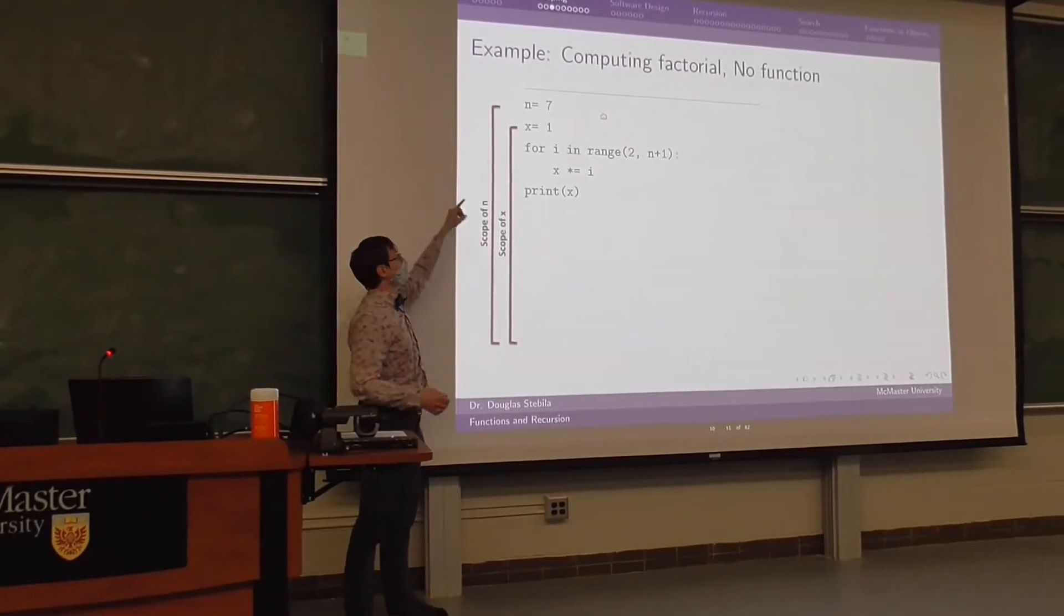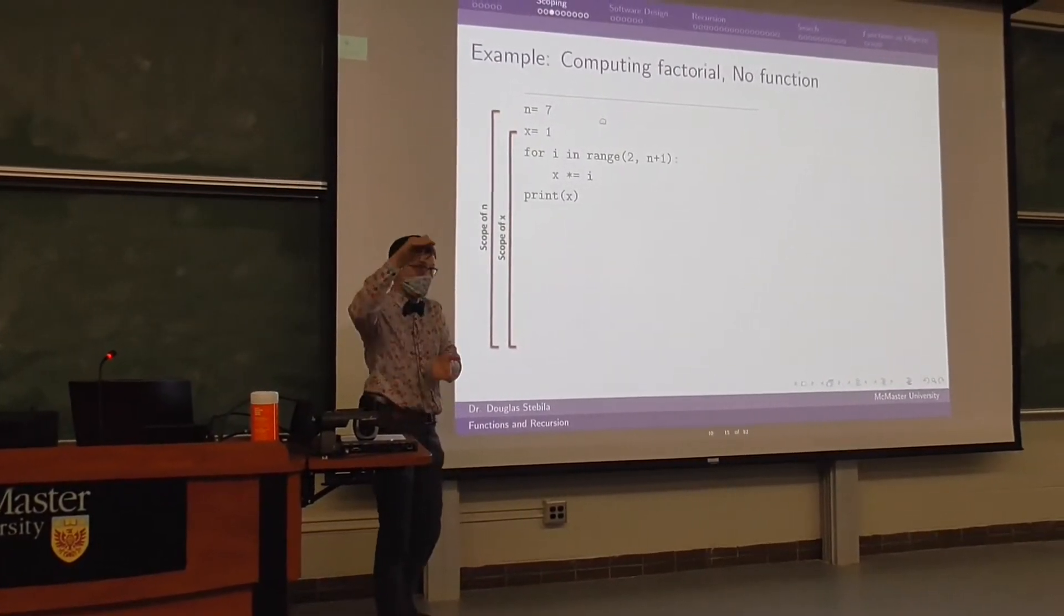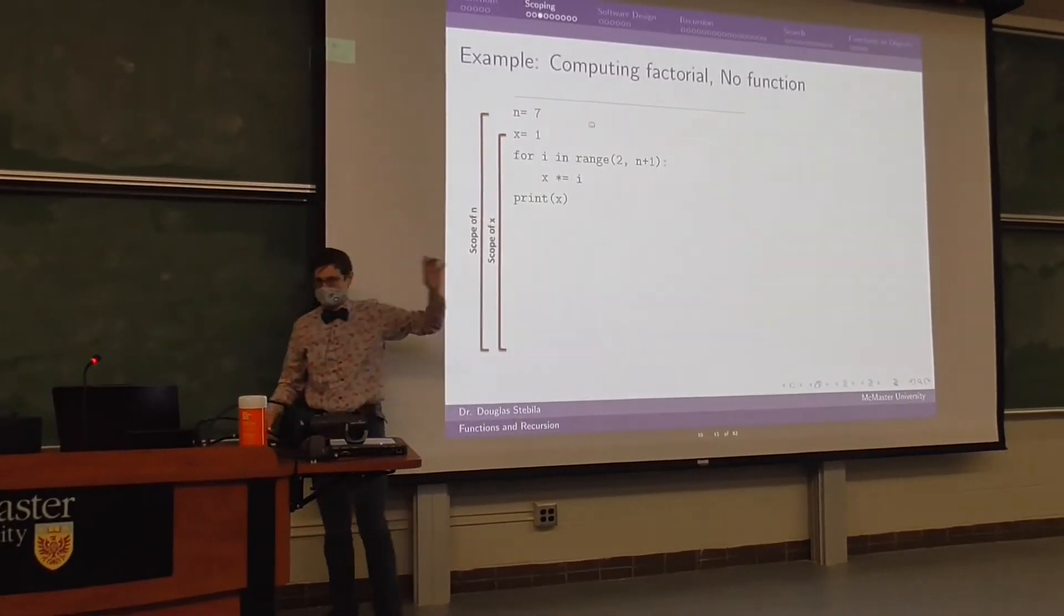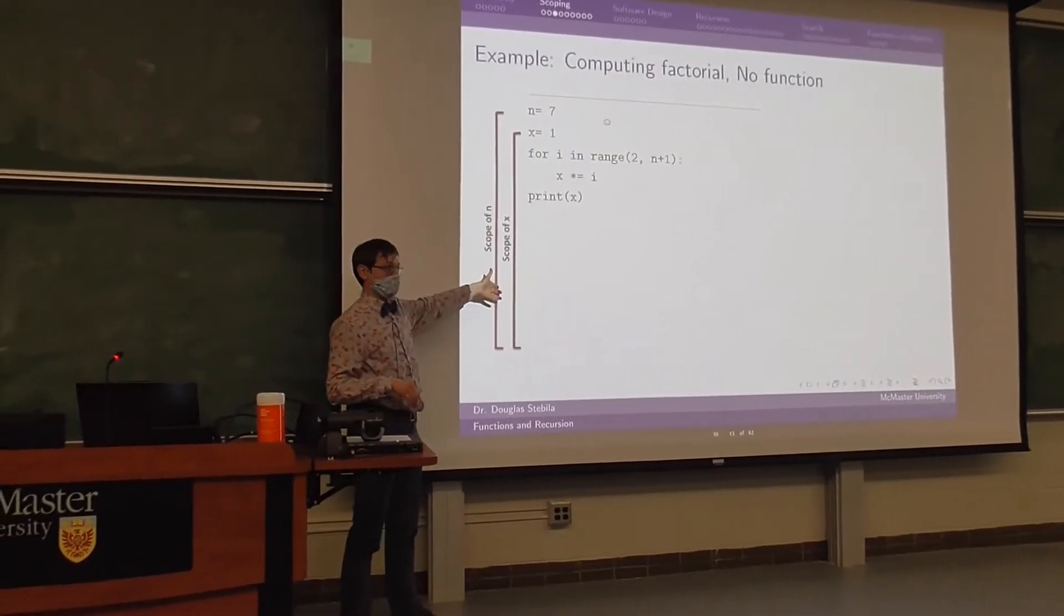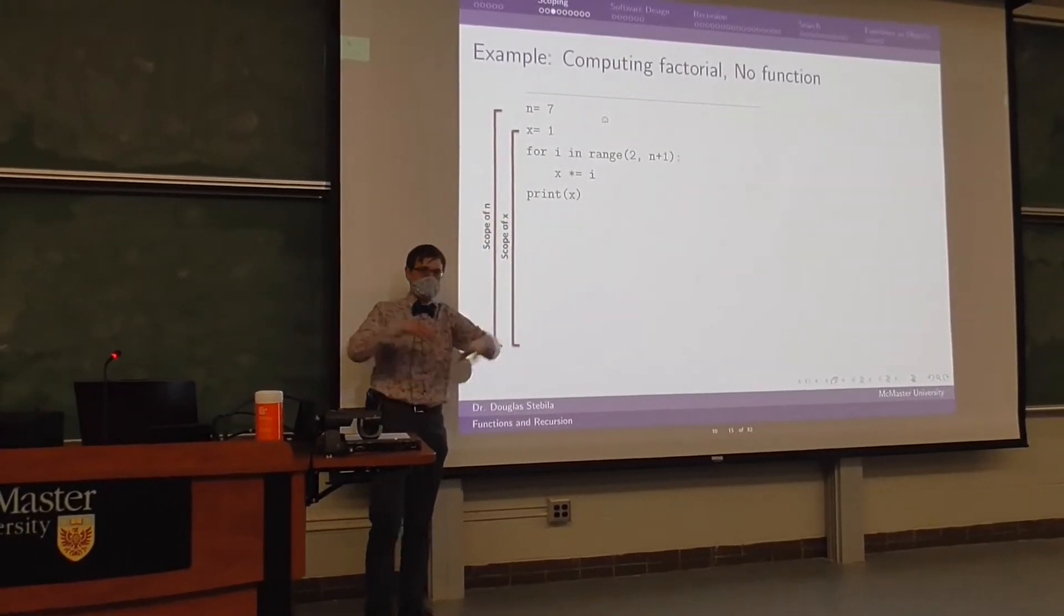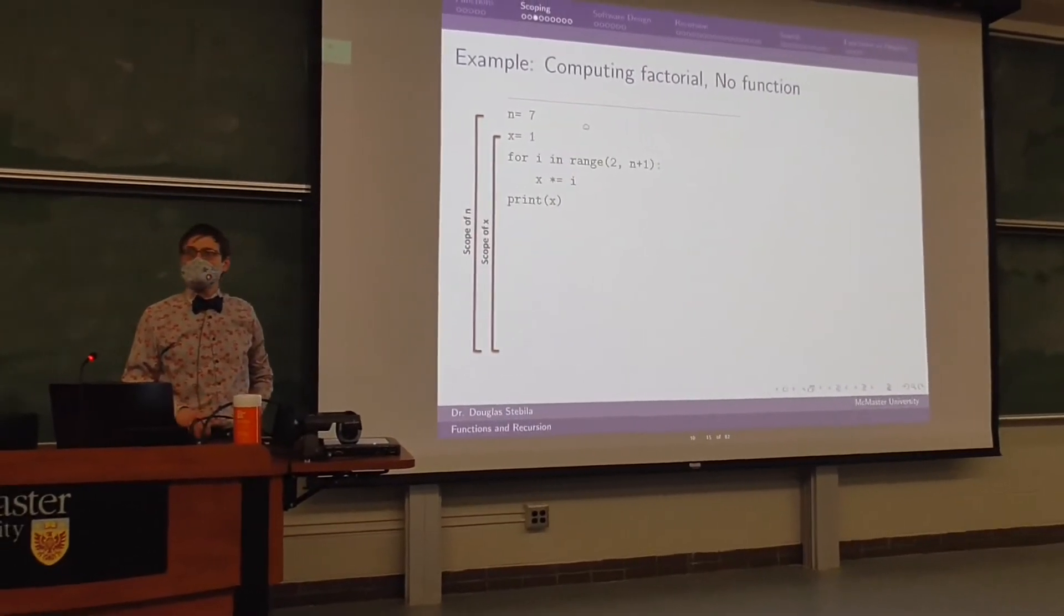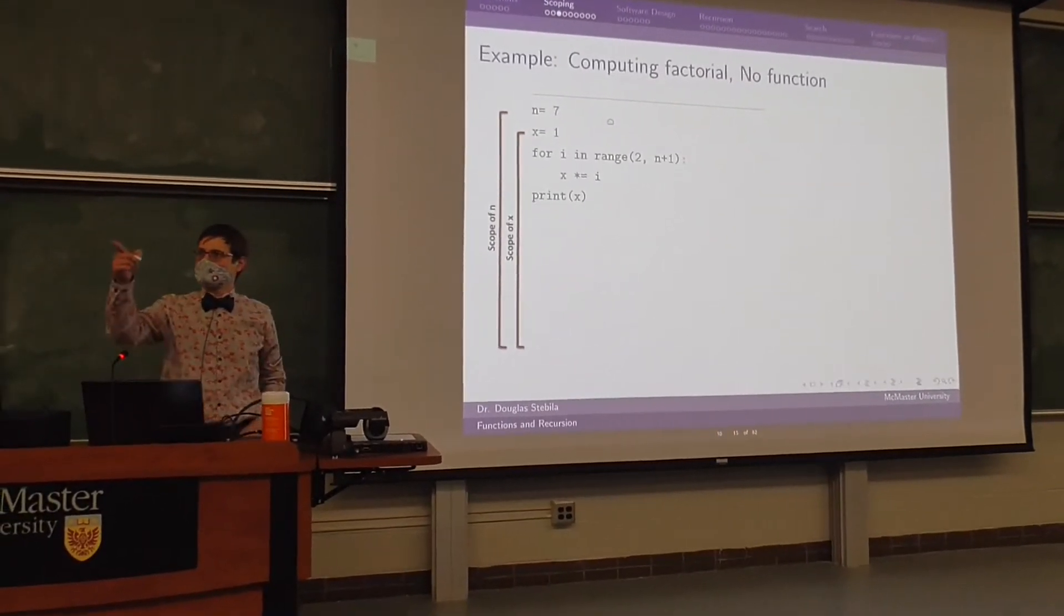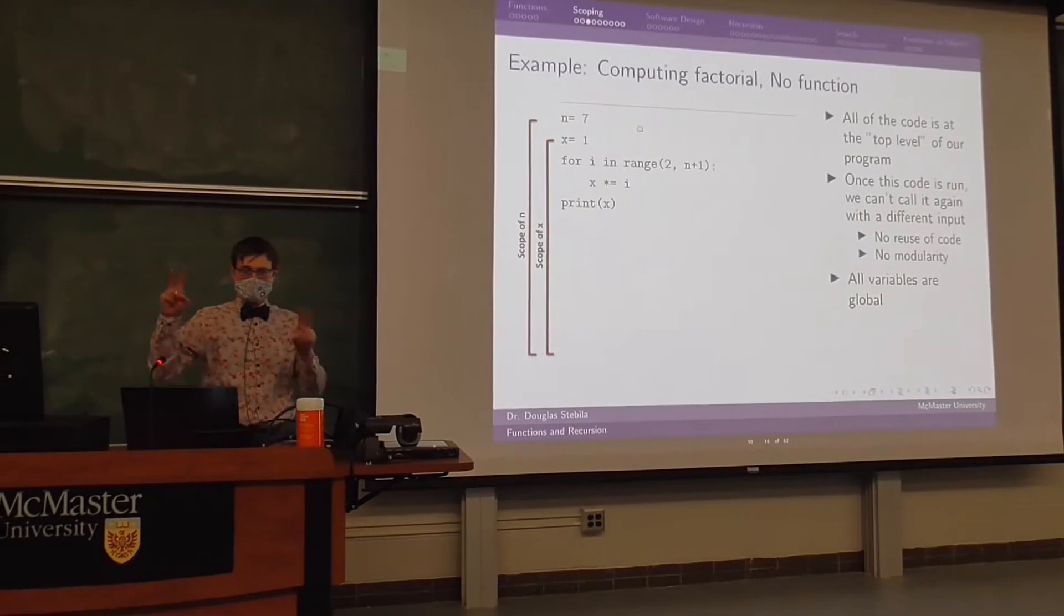We should be used to the idea by now that instructions in a program are executed in the sequence that they exist in the file. So n equals 7 goes first, then x equals 1, et cetera. The scope of x is the entire file except for the first line, which is before its declaration. Any questions so far? Should be pretty, so far so boring, right?